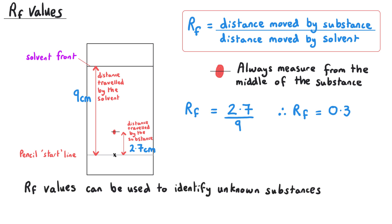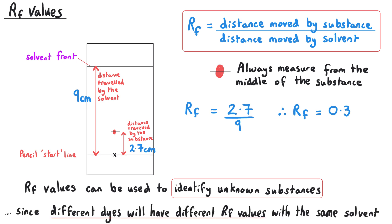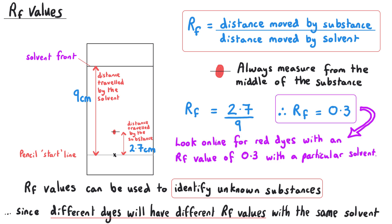The RF value can be used to identify unknown substances, since different dyes will usually have different RF values with the same solvent. We could do a chromatography experiment with some unknown substance, calculate its RF value from the chromatogram, compare this value to a reference value online for that particular solvent, and then get a positive identity for this unknown substance.